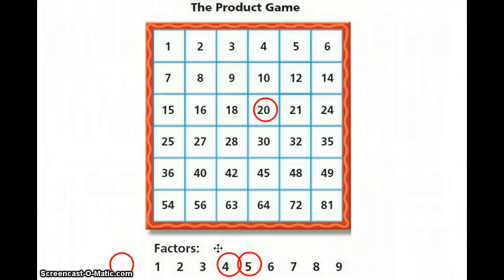Now your opponent would move either one of the paper clips. Let's say they moved the paper clip that was on the 4 and moved it to the 7. They would need to know what multiple 5 times 7 gives them. And then they would mark it. In this case, they would mark 35 because 5 times 7 is 35.